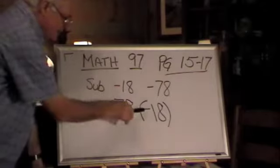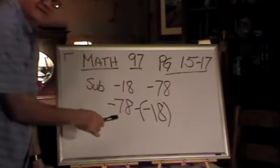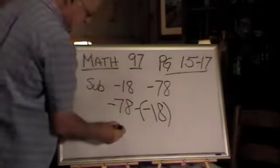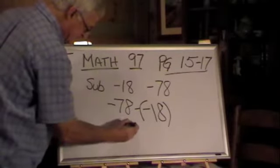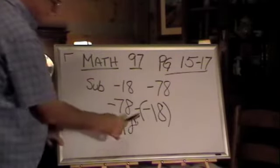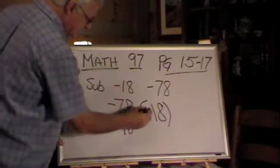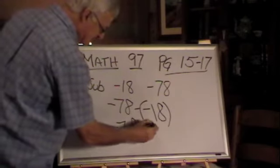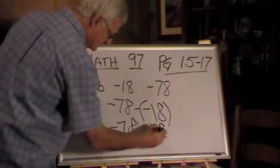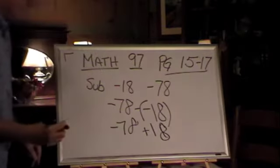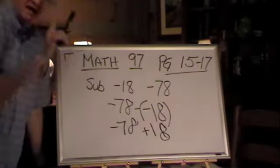Do you remember the rule with a negative of a negative? When you subtract a negative, what happens is your negative 78, the minus a minus becomes a plus 18. I'm trying very, very hard there. Make sense?